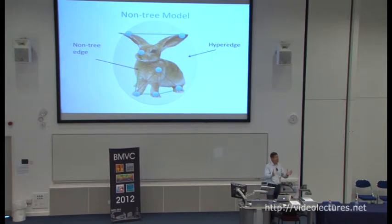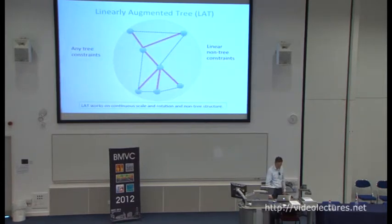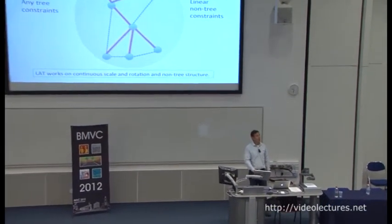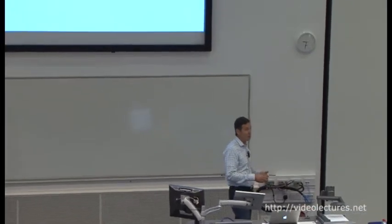Our strategy is to have any constraints on the tree part of the model — the red links — and then linear constraints on the non-tree links. This is called a linearly augmented tree, described in CVPR 2011. The basic optimization problem seeks invariant matching — invariant to rotation and scale — using a unary cost term that looks at matching a template point to a target point in an image, with a mapping function describing the mapping from target to template.